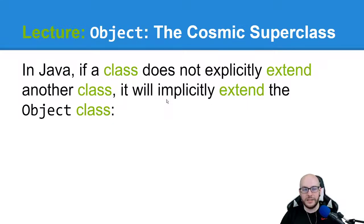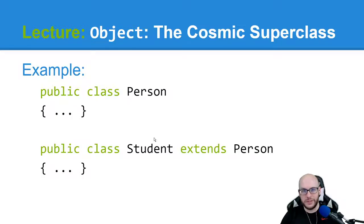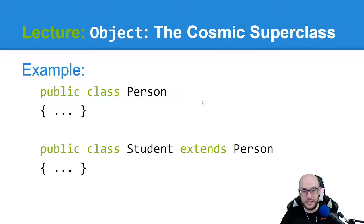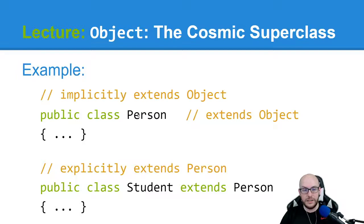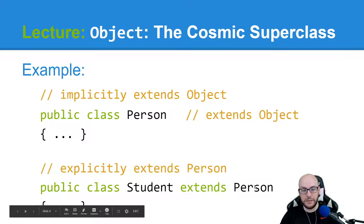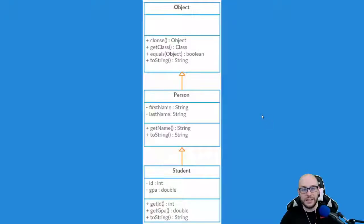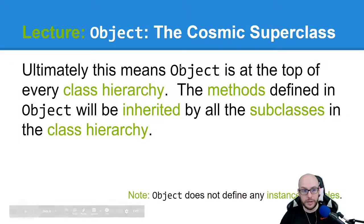In Java, if a class does not explicitly extend another class, it will implicitly extend the Object class. We wrote this whole person hierarchy, right? Person at the top, and then student, college student, and teacher underneath person. Student is extending person — that is happening explicitly. Person isn't extending anything explicitly, but what our slide is saying is that if a class doesn't extend something explicitly the way that student does, it will implicitly extend Object. So student is explicitly extending person, and person is actually extending Object. So our hierarchy technically looks more like this: student extending person, and person implicitly extending Object.